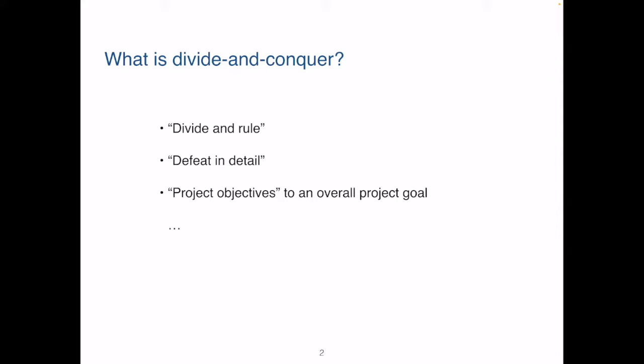Divide and conquer is in fact a strategy that can find very wide applications, both in computing and outside of computing. In politics, for instance, divide and rule is for emperors or people who rule to gain power by breaking up concentrations of power other individuals can have. We are also familiar with this example where for us to achieve a larger overall goal of a project, we break it down into more measurable objectives such that we can monitor the progress.